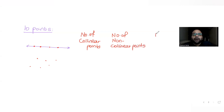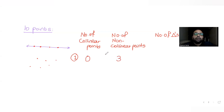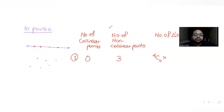Case 1: Select 0 collinear points and 3 non-collinear points. Out of four collinear points we select none — that's 4C0 — and from the six non-collinear points we select any three, which is 6C3. Since all six non-collinear points form valid triangles among themselves, the number of triangles in this case is 4C0 × 6C3.